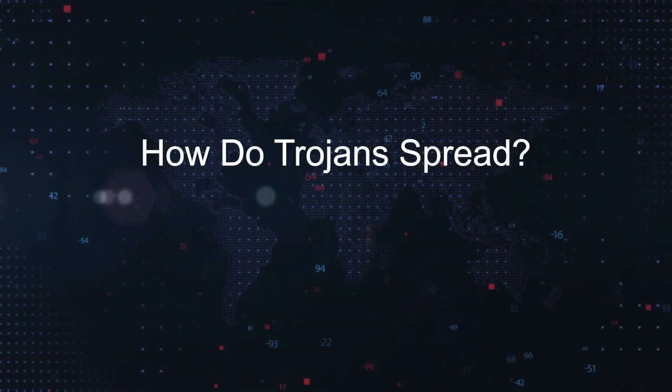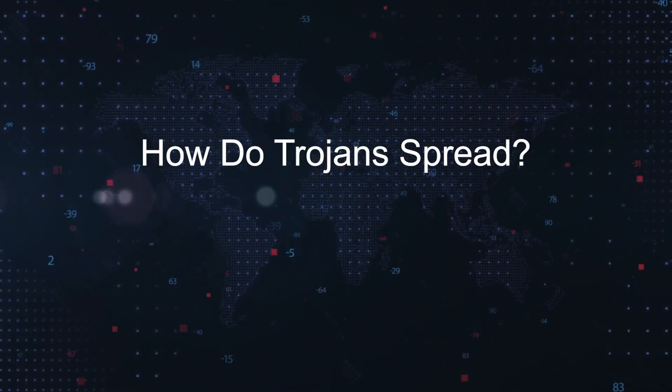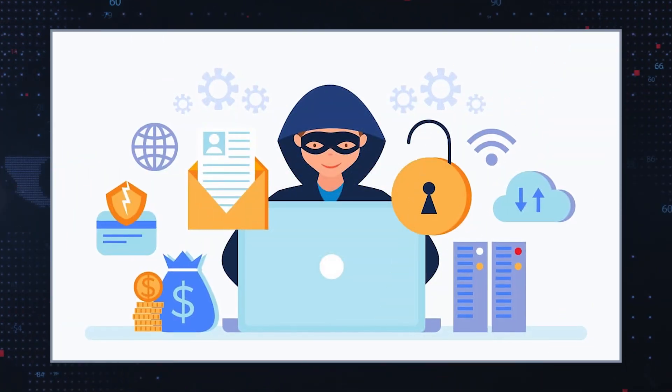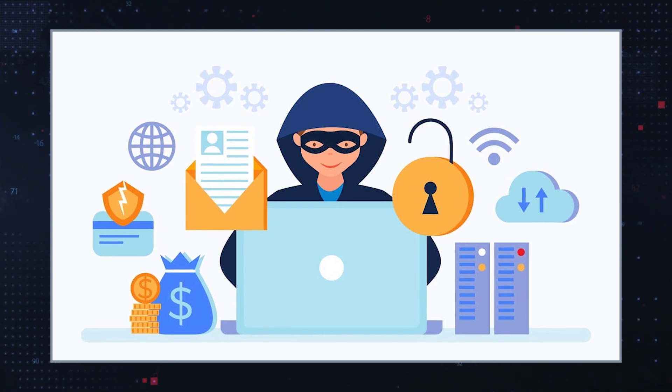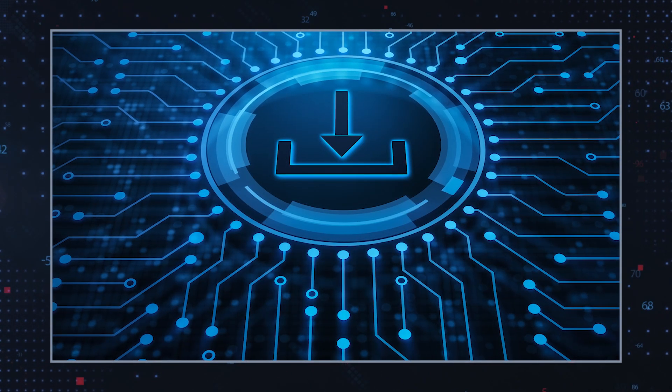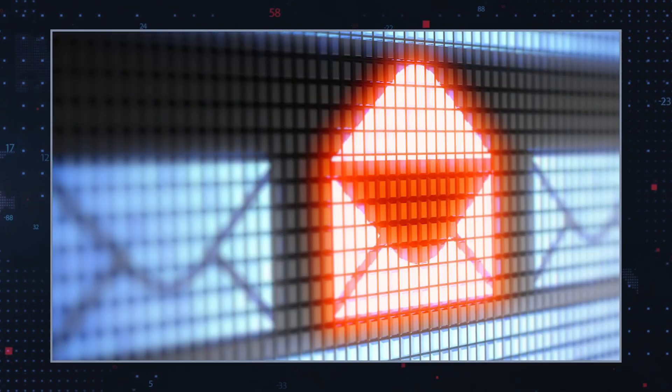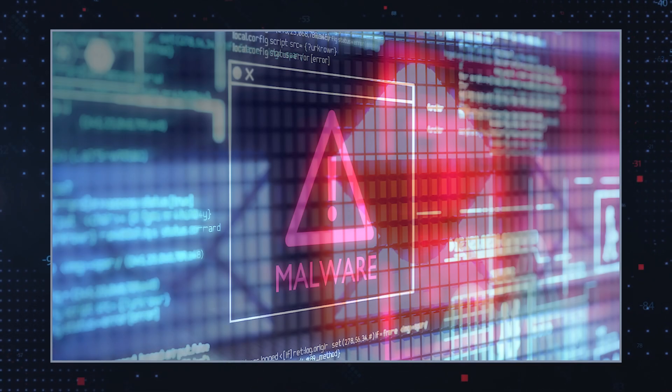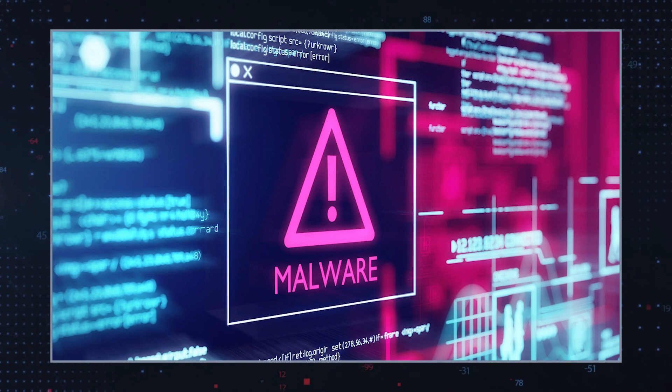How do Trojans spread? Social Engineering. Trojans are commonly distributed through social engineering tactics, where cybercriminals trick users into downloading and executing malicious files. This happens through email attachments, fake software, or deceptive download links.